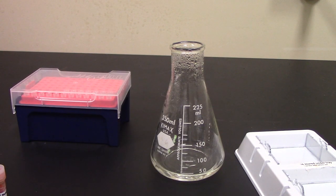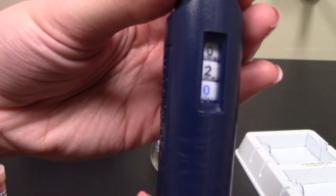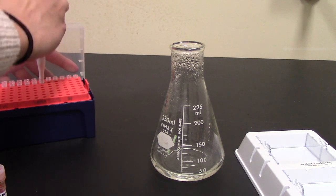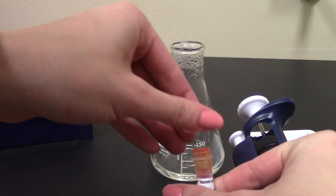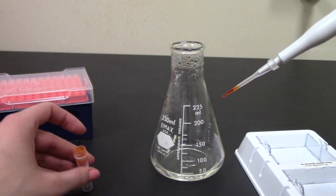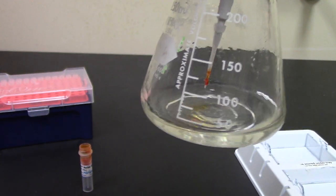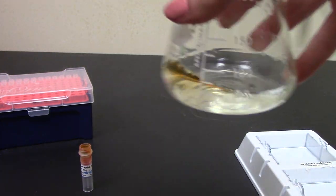I'm just going to set my pipette to 2 microliters, get my pipette tip, open up the stain, and pipette up 2 microliters and add it into my gel and swirl it around.